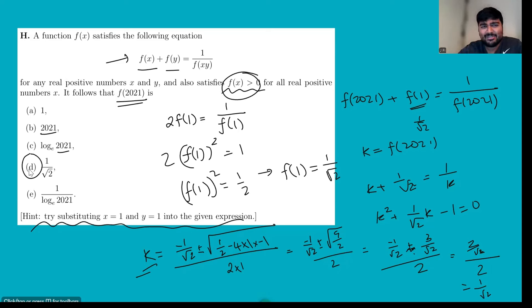You may have noticed that in this solution, I didn't actually use the number 2021 at all. There was nothing special about 2021. You can replace 2021 in this argument with any number you want. What's quite cool, then, is that this function is a constant. So f(x) is the constant function 1 over root 2.